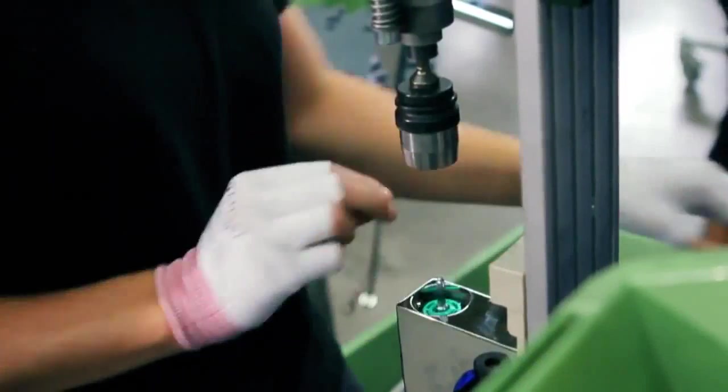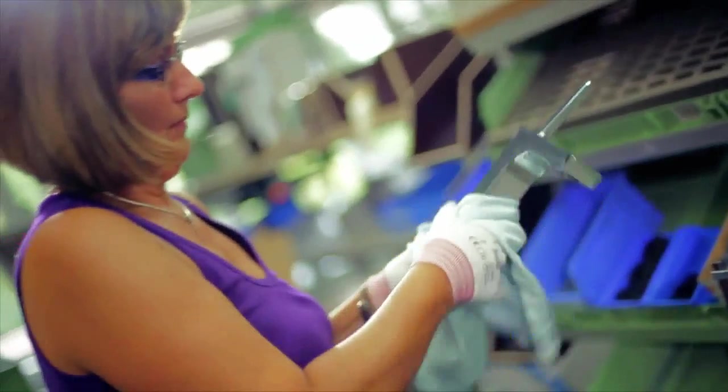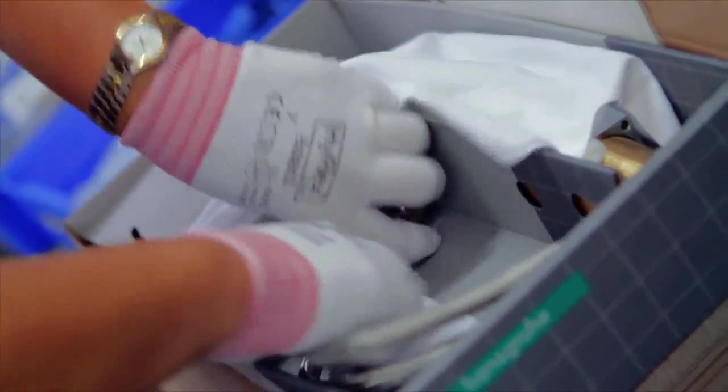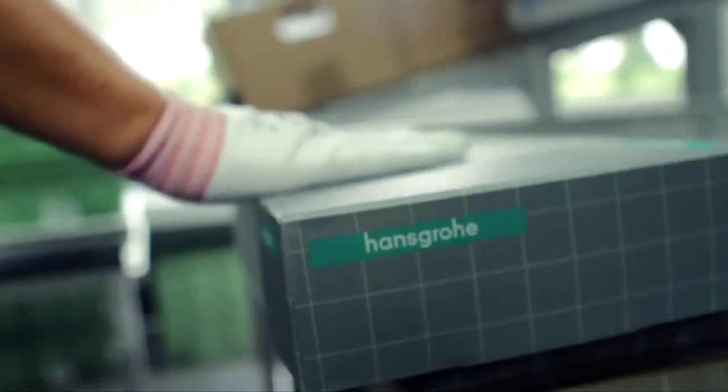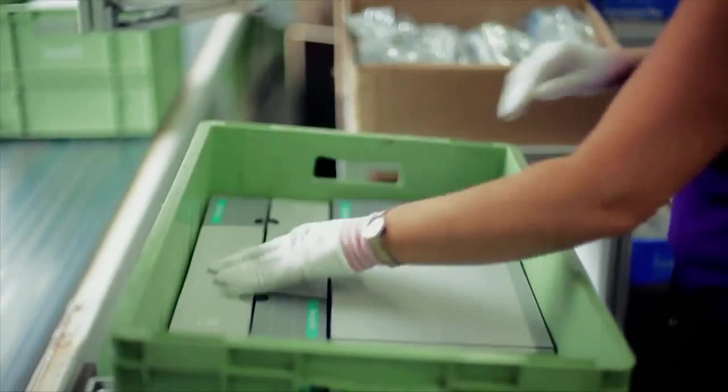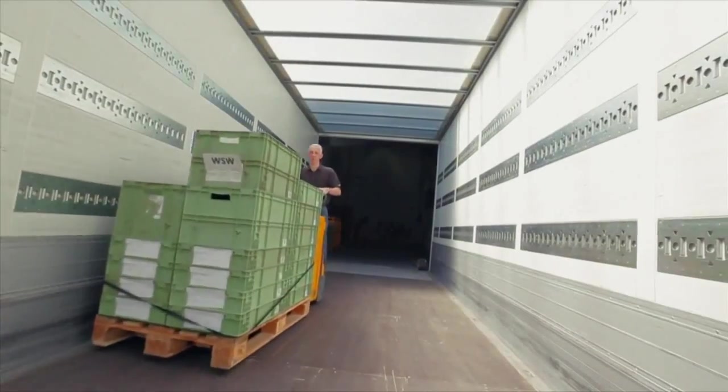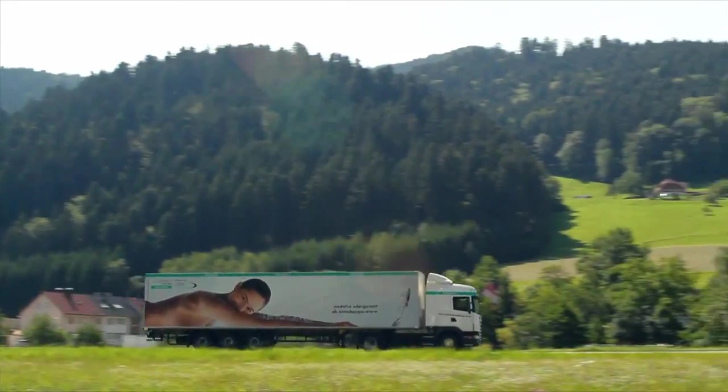However quick and flexible the assembly process, the focus is always on accuracy and quality. Finally, the installation parts and manuals are added. The weighing process confirms if the package contains everything it should, no more and no less. The mixer arrives at the central warehouse in Offenberg, ready packaged. From there, it embarks upon its journey to Singapore or Sao Paulo, Cape Town or Kiel.